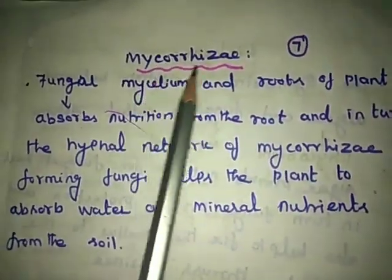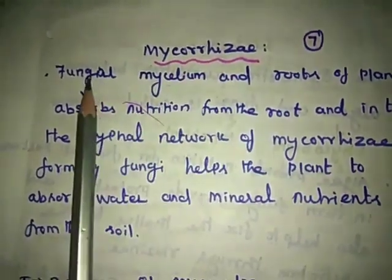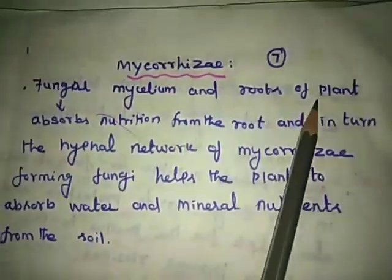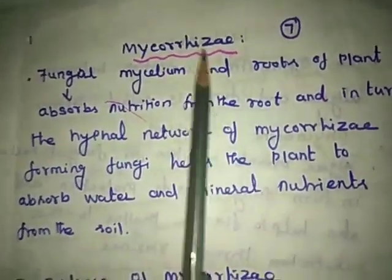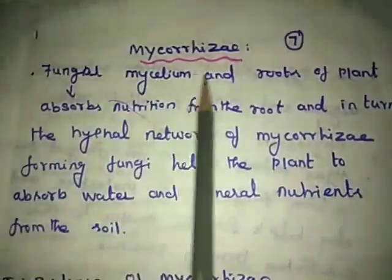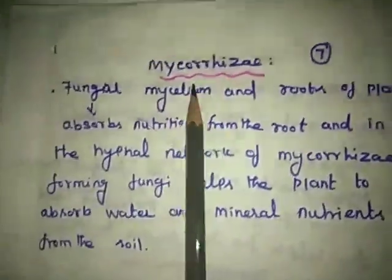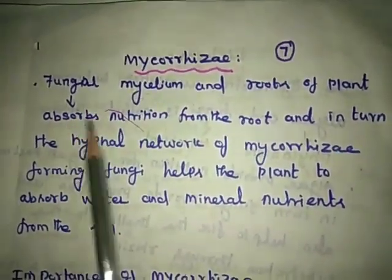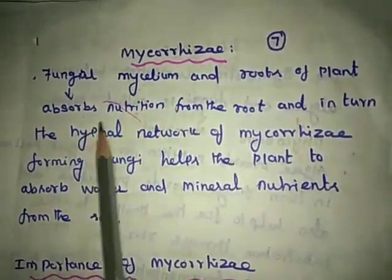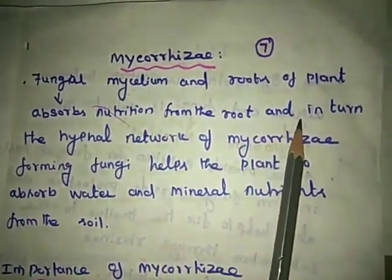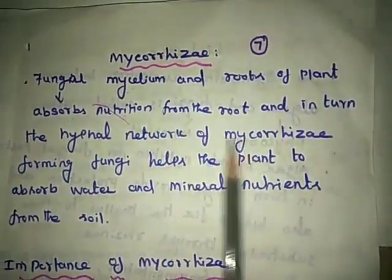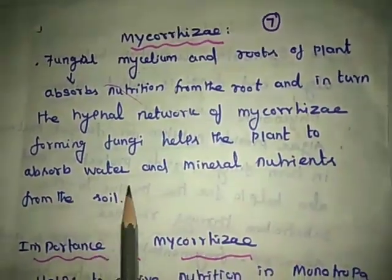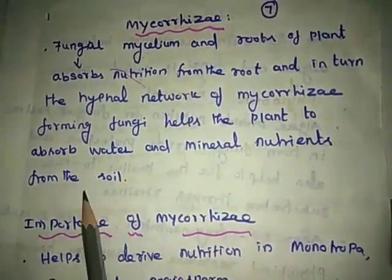The symbiotic association between fungal mycelium and roots of a plant is called mycorrhizae. In this relationship, the fungi absorb nutrition from the root, and in turn the hyphal network of mycorrhizae-forming fungi helps the plant to absorb water and mineral nutrients from the soil.